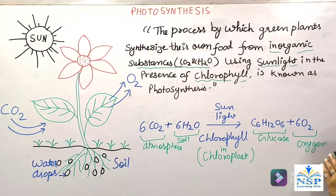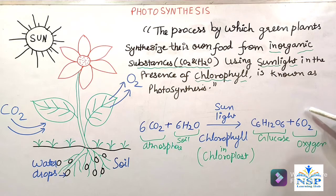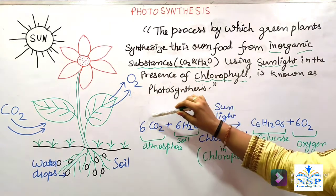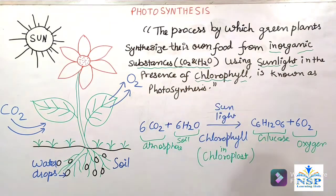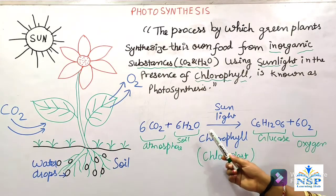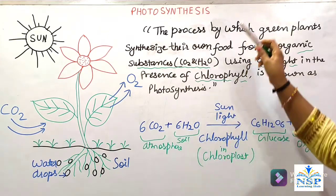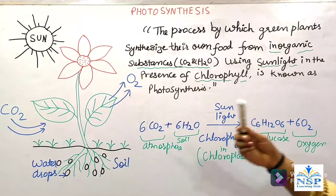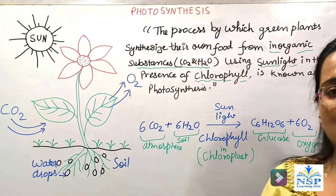Oxygen कहां से निकलती है? एक question आपको आता है कि oxygen जो निकलती है photosynthesis की process में, वो हमें कहां से मिलती है — water से या carbon dioxide से? तो जो oxygen मिलती है, वो हमें water से मिलती है। इसके कुछ events हैं photosynthesis के — यह अभी मैं आपको बताती हूँ।